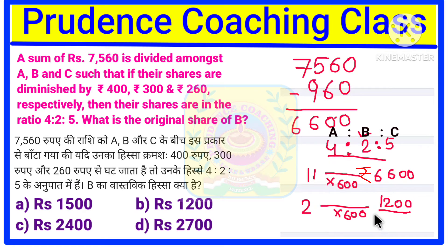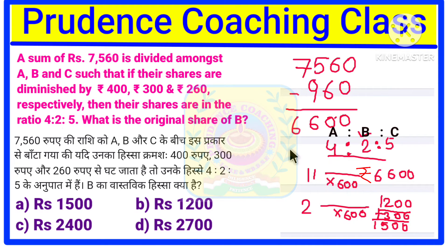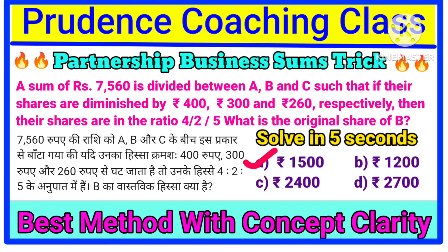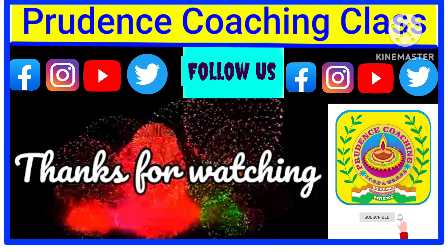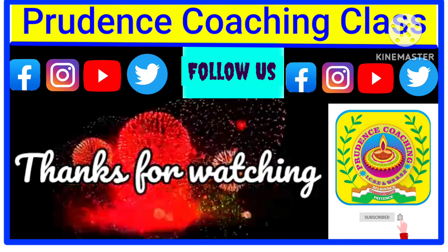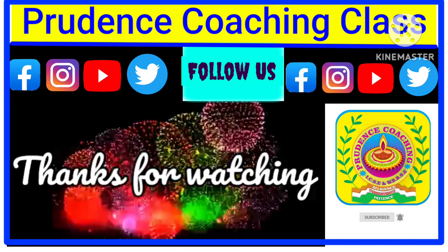This 1200 rupees is B's share after deducting 300 from B's original share. So you need to add back 300 rupees. After adding back 300, your answer is 1500 rupees. Therefore, B's original share is 1500 rupees — that is the correct answer, option A.